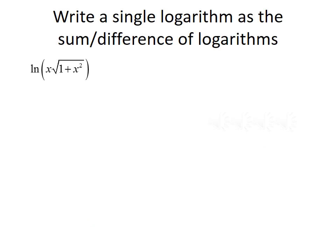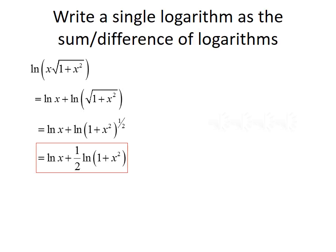For the next examples, we'll write a single logarithm as the sum or difference of logarithms. We'll expand the natural log of x times the square root of 1 plus x squared. Using the product property, we get the natural log of x plus the natural log of the square root of 1 plus x squared. Rewriting the square root as a fractional exponent gives the natural log of x plus the natural log of 1 plus x squared to the one-half power. Using the power rule, this becomes the natural log of x plus one-half times the natural log of 1 plus x squared.